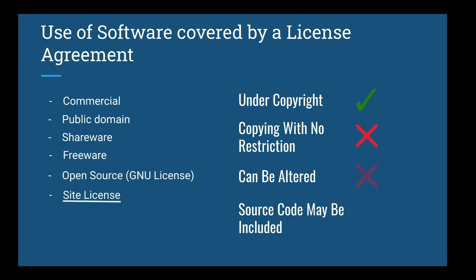Site licenses are covered under copyright and specify the amount of devices the product can be installed upon. Creative commons licenses alter how copyright material may be used without charge. These do not deal with distribution of source code and are commonly used for media. All material is free to be used, altered or distributed for non-commercial reasons, but the author must be credited. There are many different types of creative commons licenses, and the best thing you can do is to choose the correct media with the correct license for your use — and you should read the creative commons license agreements as they apply to the media you choose.